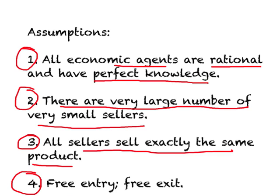The last assumption for perfect competition is free entry and free exit — meaning it is costless, both legally and financially, for any firm to start or quit a business. These are the assumptions that give us a situation where each seller and buyer is a price taker, and this market structure is called perfect competition.